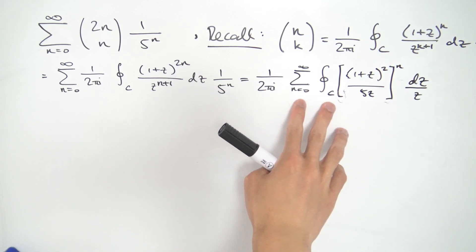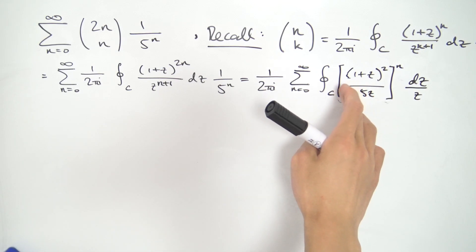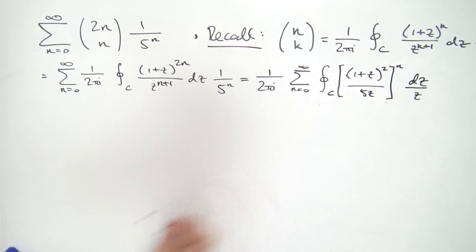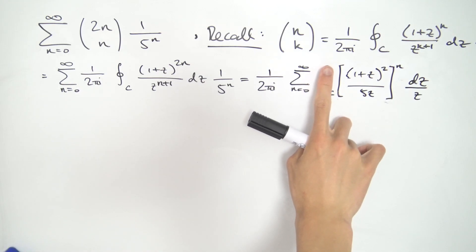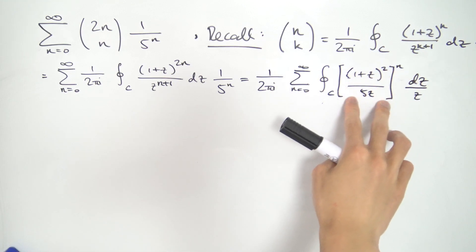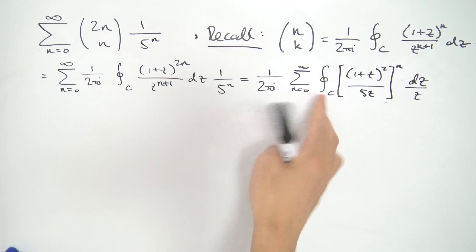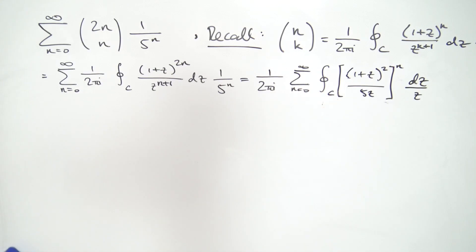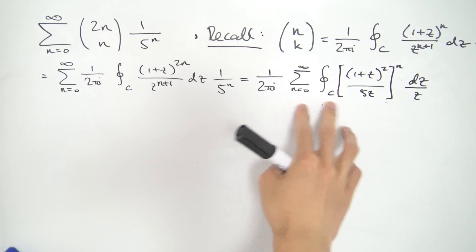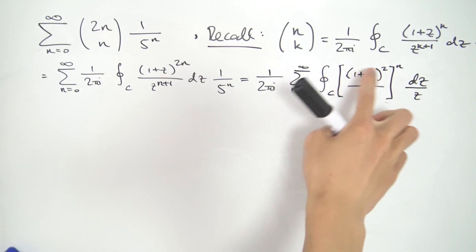The next thing to do is interchange the summation and the integration. Now in general you can't quite do this, but in this case it turns out we can if we choose our contour properly. Notice that if you block out the nth power, that's the sum of something raised to the nth power — exactly the geometric series. The geometric series nicely uniformly converges within a certain radius of convergence, and if you're uniformly convergent, you can exchange the summation and integration.